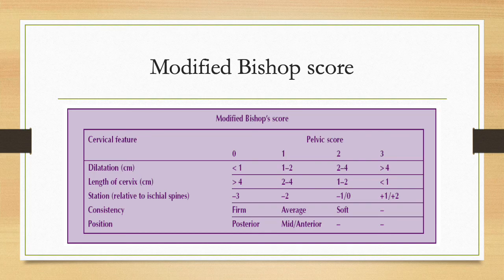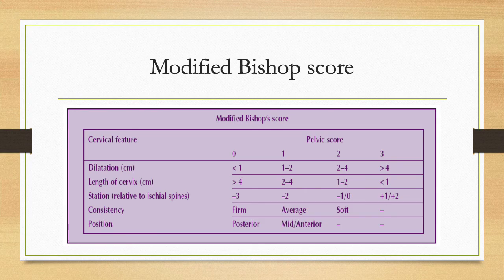We can't discuss induction of labour without mentioning Bishop's score. Bishop's score is a pre-labour scoring system initially designed by Prof Emeritus Edward Bishop, first published in August 1964. It was originally designed to assist in predicting whether induction of labour would be required. With the modified Bishop's score, we now use it to decide on the method of induction, depending on whether there is a favourable or non-favourable cervix. A favourable cervix has been defined differently in the literature — some say a score of six or more, others say eight or more — indicating higher chances of successful induction.